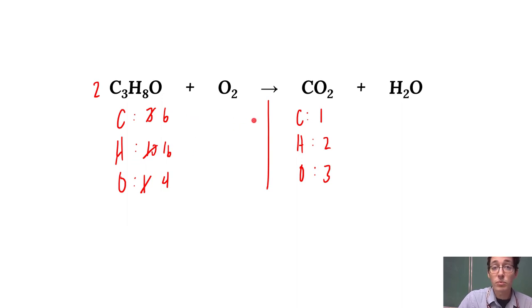And from here on out, it can be pretty straightforward. So if we do our carbons, I'm going to start with that. I've got six in my reactants and only one in my products. I'm going to put a six here. So that gives me six carbons here and I'm going to update my oxygen now. Six times two is 12 plus one is 13.